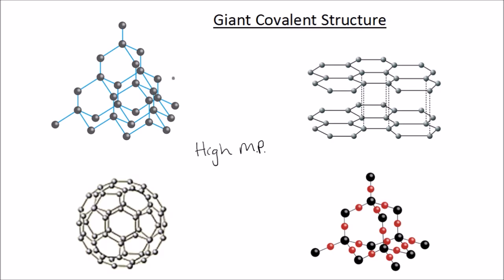Here are some examples: here we have diamond, to the right is graphite, down below silicon dioxide, and bottom left is a fullerene. Now diamond, graphite, and fullerene are all made of simply carbon atoms whereas silicon dioxide is silicon and oxygen.